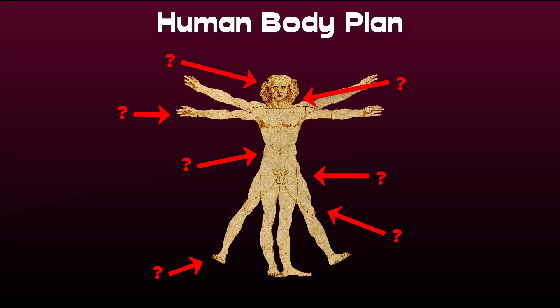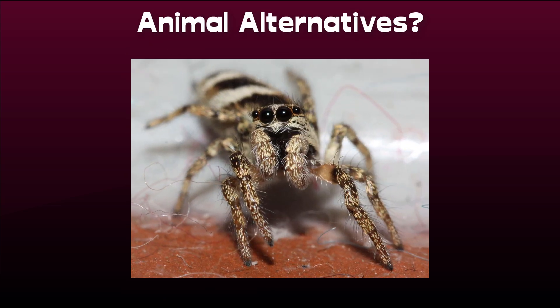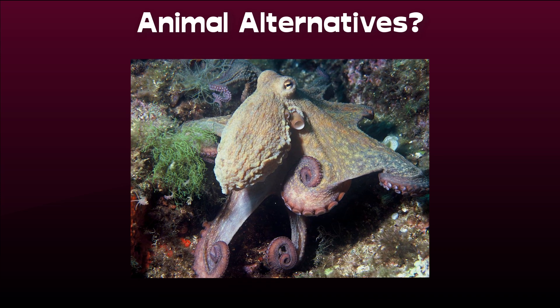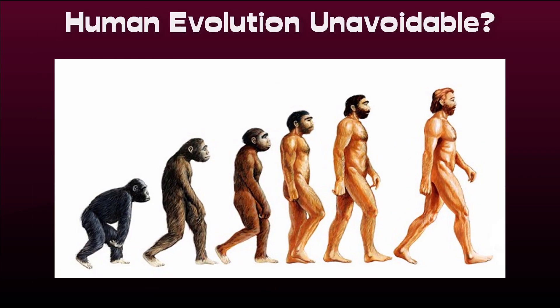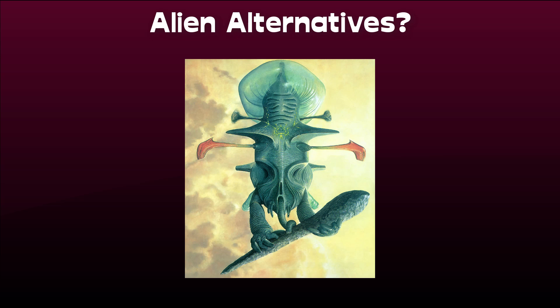More importantly, how dispensable are these different parts and does the animal kingdom offer clues as to any possible alternatives? Is the human body plan an unavoidable epitome of evolution, or can we expect sentient, tech-savvy species on other planets to look completely different? Let's find out.